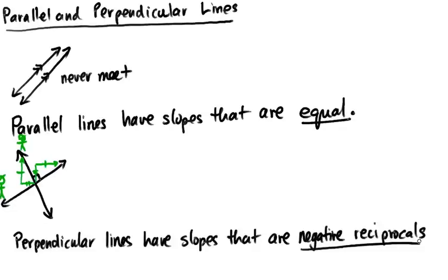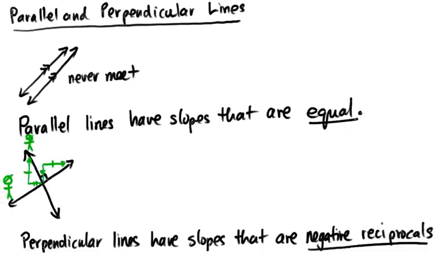Perpendicular lines have a special property: their slopes are negative reciprocals of one another. A negative reciprocal is a little bit tough to understand, but it's not too bad. Let's take a look at that and then we can come back and confirm that these lines do indeed have negative reciprocal slopes.